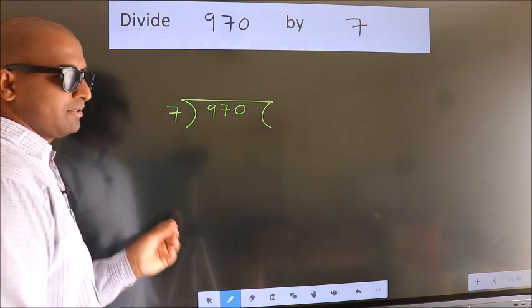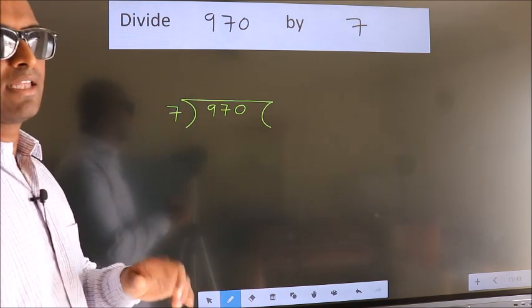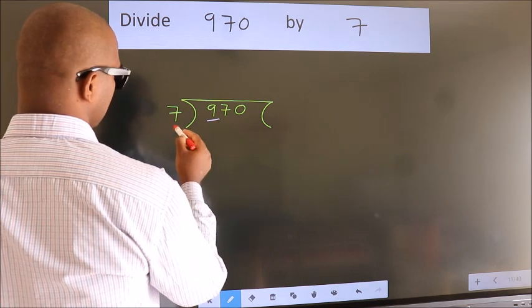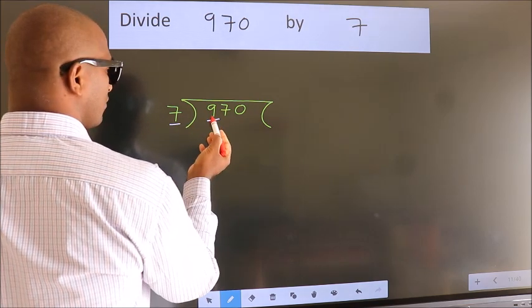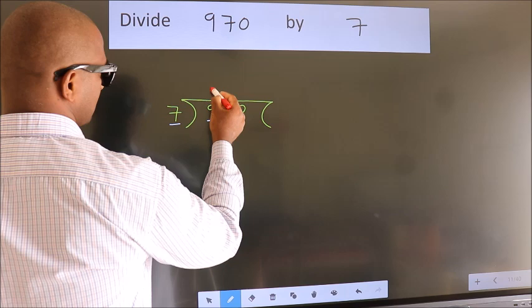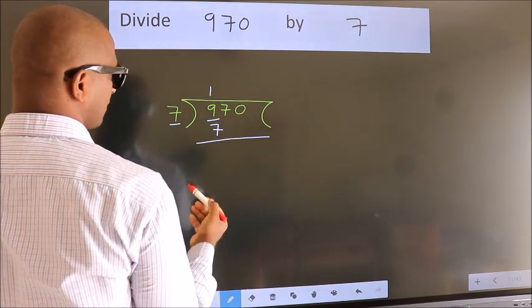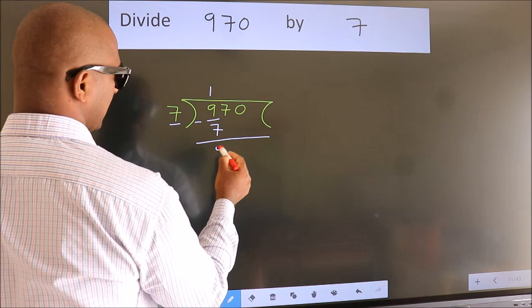This is your step 1. Next, here we have 9, here 7. A number close to 9 in the 7 table is 7 once 7. Now we should subtract. We get 2.